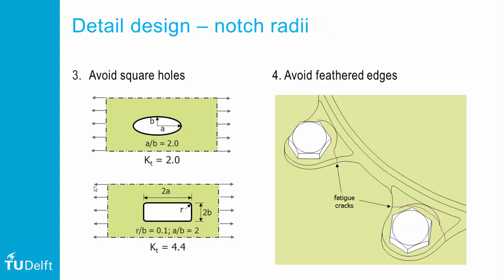The third step is to avoid squared holes. Ellipses are better, and if necessary one may try rounded squared holes, but take the radius as large as possible. Keep in mind that the windows of the aerial direction finder in the Comet aircraft were windows that were too squared.